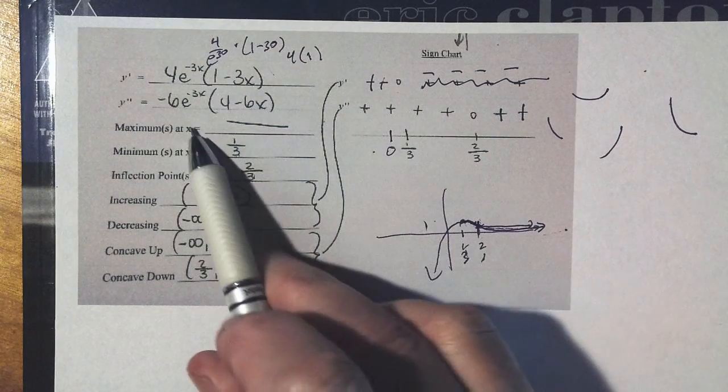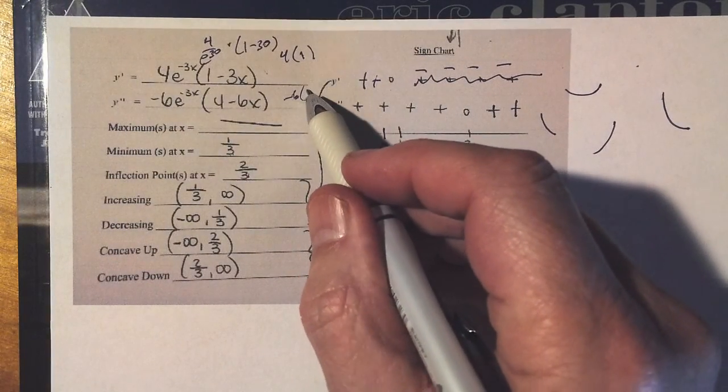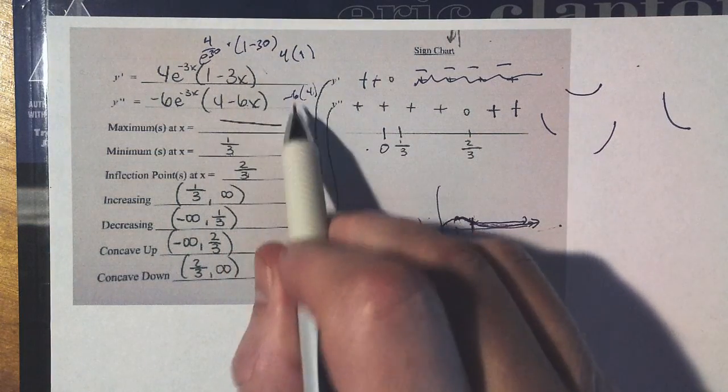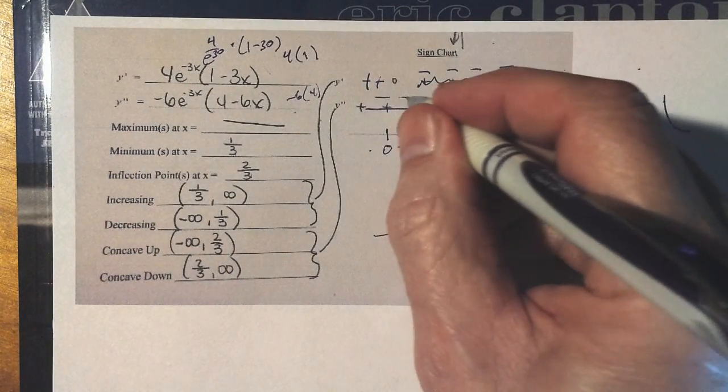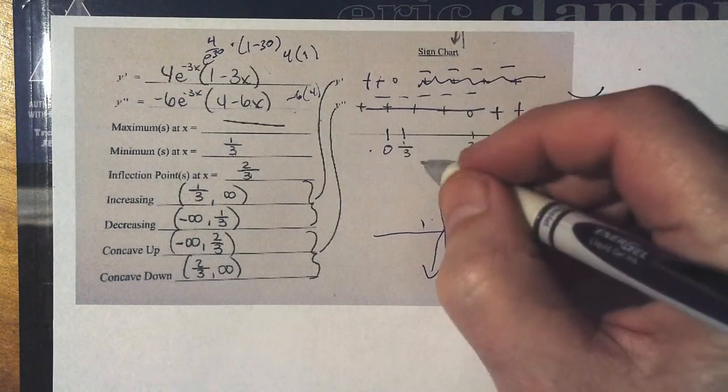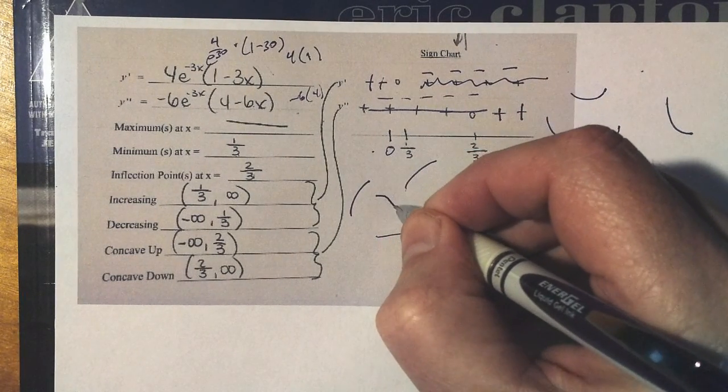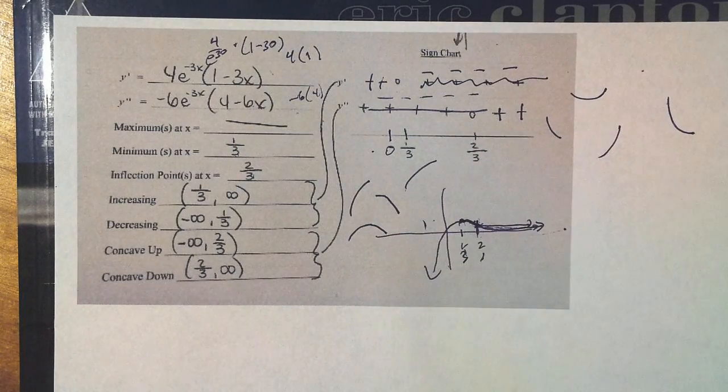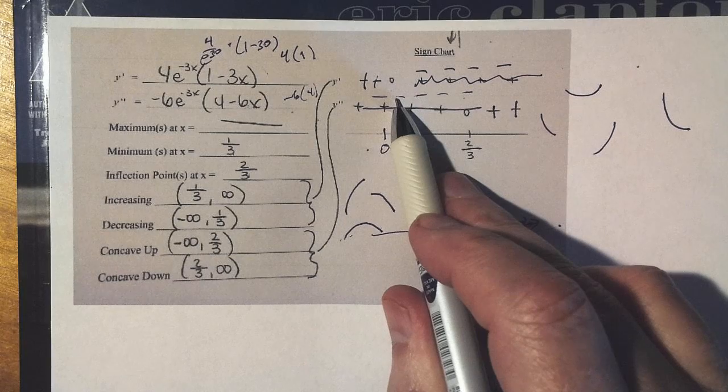If I put something to the left of two-thirds, like zero, I get negative 6 times 4 minus 0. I get negative 24. That is a negative to the left of here. That means it's cupping, it could be going up, but cupping down. It could be going down, cupping down. It could be going up and then coming back down, but it's definitely cupping down to the left.